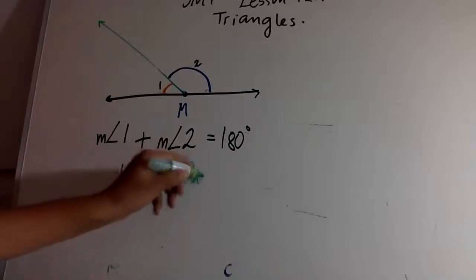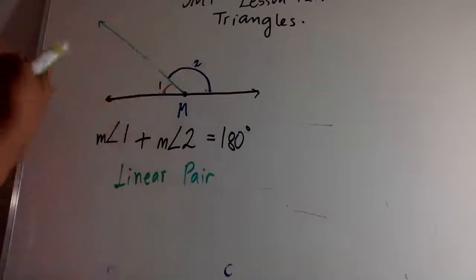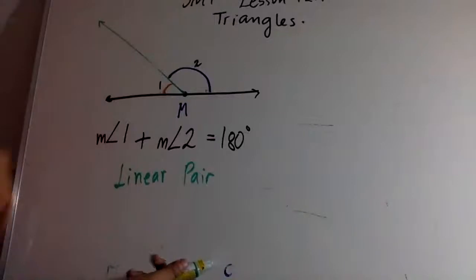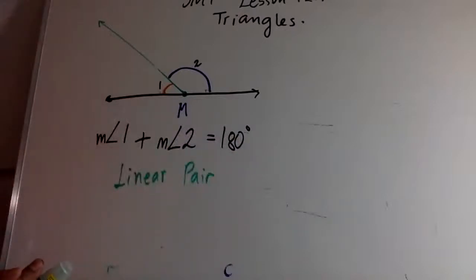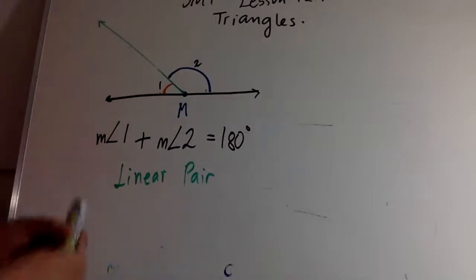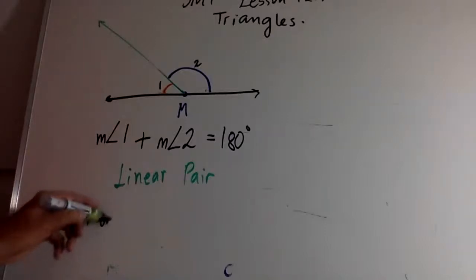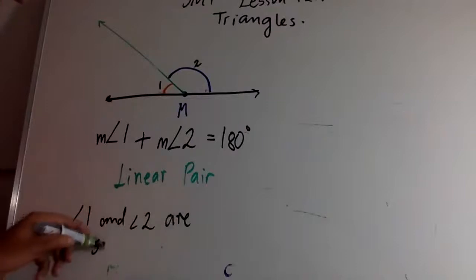This is what we call a linear pair. When a straight angle has been cut by any ray or segment into two different angles, the two angles add up to 180 degrees. We say that angle one and angle two are supplementary angles.